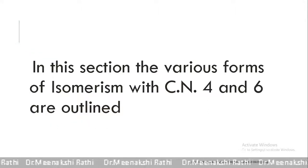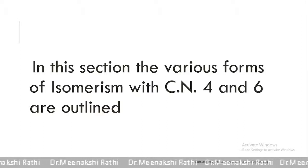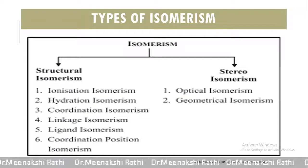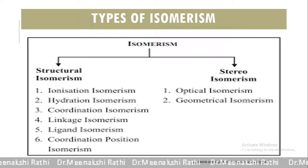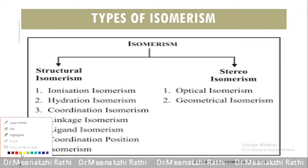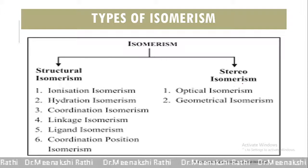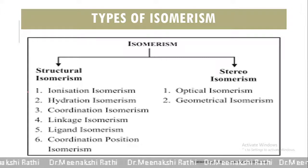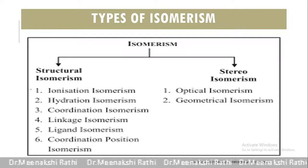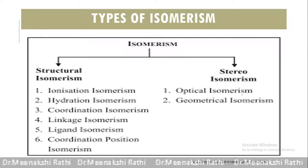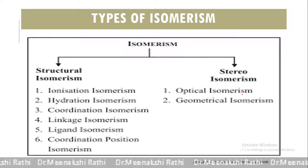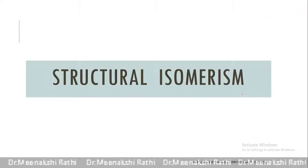In this section, the various forms of isomerism with coordination number 4 and 6 are outlined. There are two types of isomerism shown by complexes: structural isomerism and stereoisomerism. Under structural isomerism, we will see ionization, hydration, coordination, linkage, coordination position, and polymerization isomerism. Under stereoisomerism, we will see optical isomerism along with geometrical isomerism. Let's begin with structural isomerism.